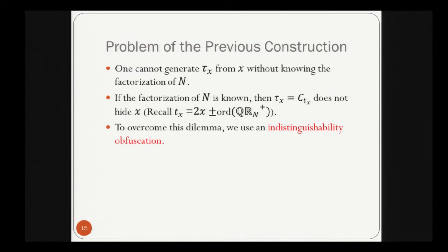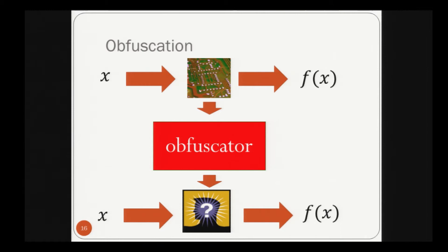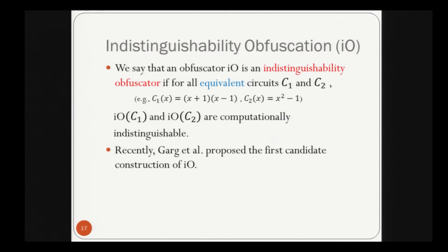In general, obfuscation makes a circuit unintelligible while preserving its functionality. We use indistinguishability obfuscation (IO), a slightly weaker notion. An obfuscator IO is an indistinguishability obfuscator if for all equivalent circuits C1 and C2, IO(C1) and IO(C2) are computationally indistinguishable. Recently, Garg et al. proposed the first candidate construction of IO, which we use here.